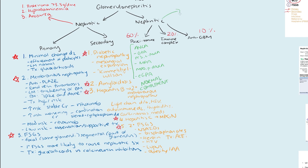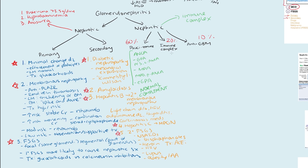Nephritic syndrome is related to immune complexes causing disease and inflammation, which is why checking complement levels gives us a really good idea of how immune complexes are mediating these problems. For immune complex related nephritic syndrome, some can cause decreased complement levels and others will have normal complement. Of the ones with normal complement levels — still immune complex mediated — the complement levels you check are going to be normal.